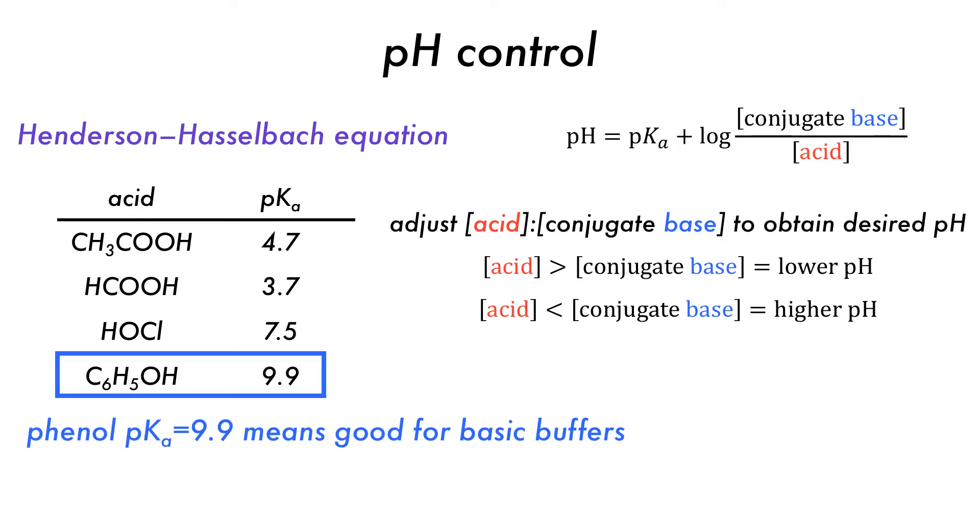This means that phenol is a great choice for a basic buffer as its pKa value is high, but formic acid is not because it has a low pKa value.